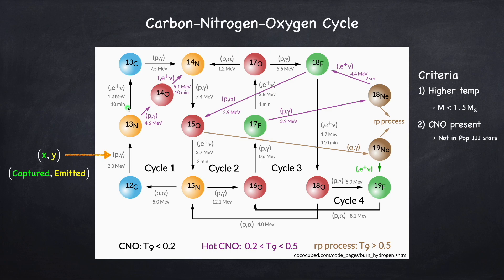Let's take a look at the cold CNO cycle, which are all the black arrows. There are four sub-cycles, and all four of these cycles involve at least one beta decay. So that means, for example, between nitrogen-13 and carbon-13 you have to wait around for your nitrogen-13 to decay into carbon-13. So the total rate of the CNO cycle will be limited by the beta decays.